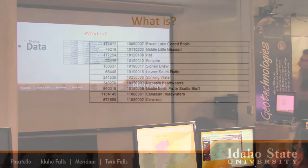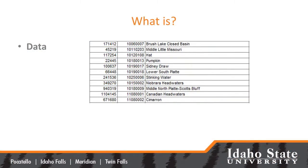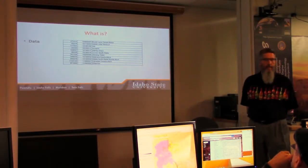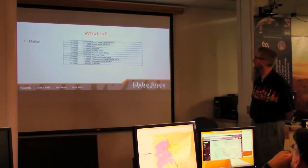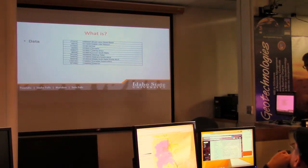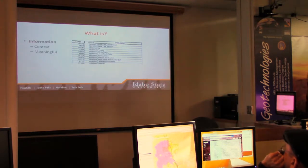What is data? Here's an example of data — you see a bunch of numbers in a column and a bunch of words. Unless you're really familiar with what all this stuff is, it's just numbers, letters, and words. It's data. Anyone have a clue what this might be? Yeah, it's watershed data.